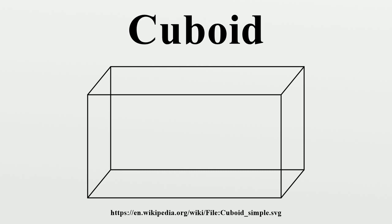The terms rectangular prism and oblong prism, however, are ambiguous, since they do not specify all angles. The square cuboid, square box, or right square prism is a special case of the cuboid in which at least two faces are squares.